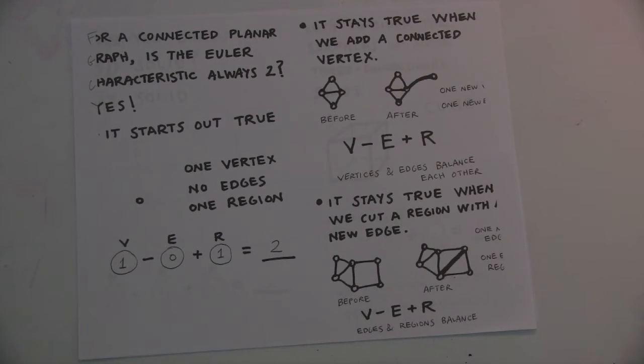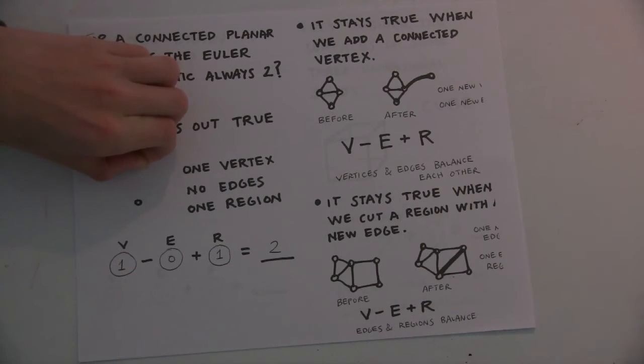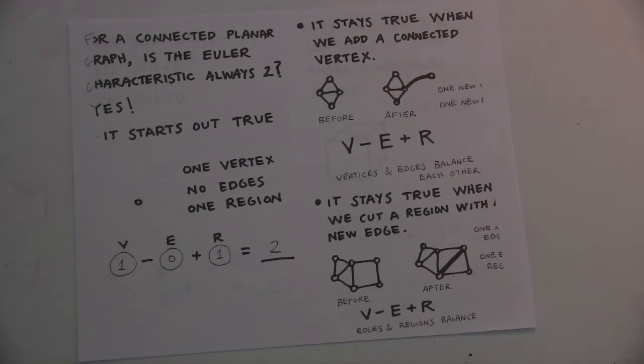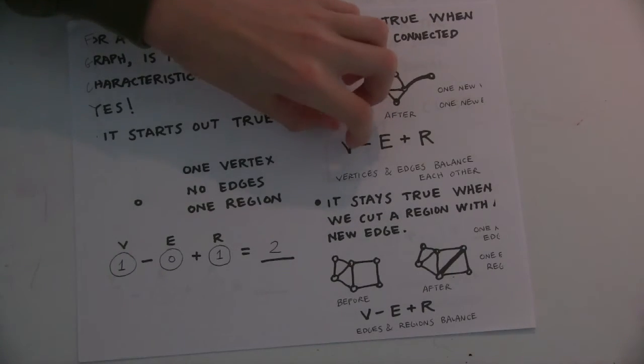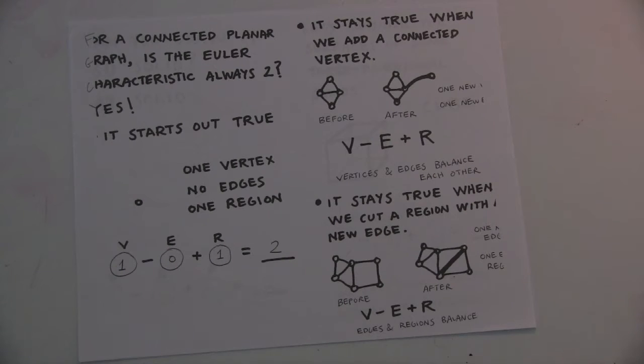It stays true when we add a connected vertex. So you can imagine adding one edge and one vertex, which would be adding one to something we're adding and one to something we're subtracting away. So those would cancel out.